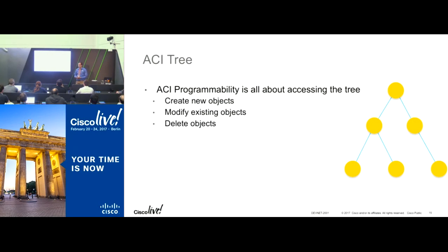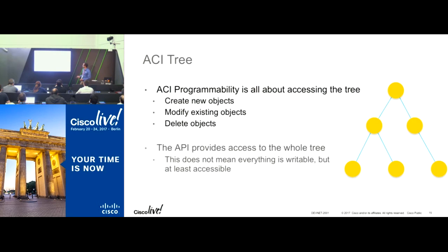The three main actions in automation are: creating new objects, modifying existing objects, or deleting objects. The REST API provides full access to the entire Management Information Tree — everything exposed, nothing hidden. Whatever you can do in the GUI, you can do with REST APIs.